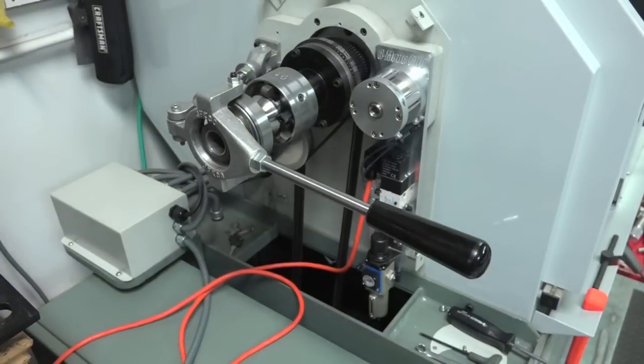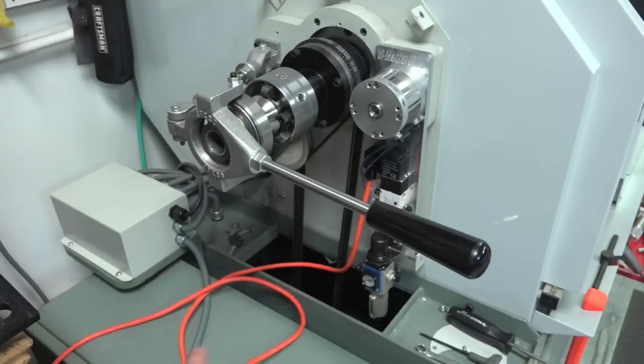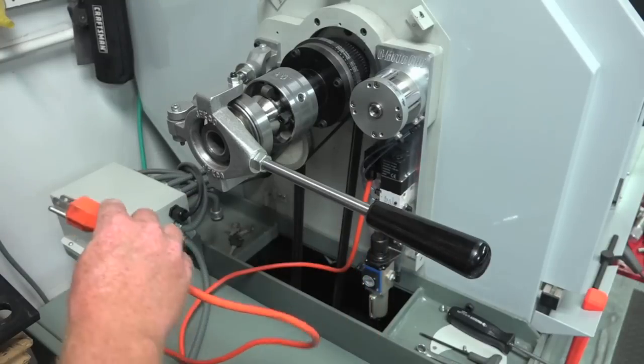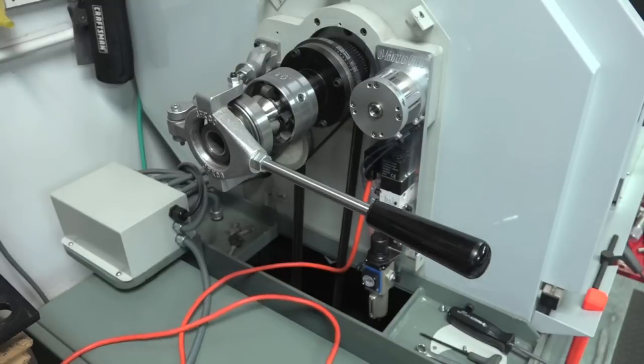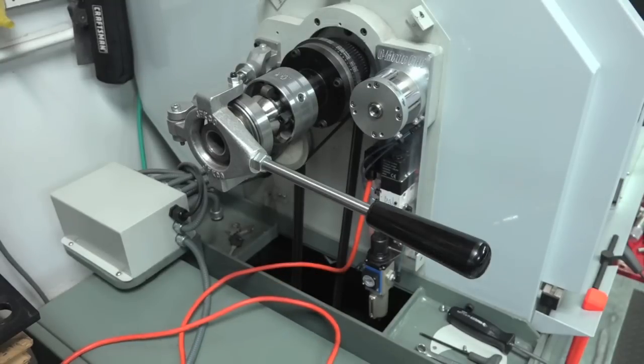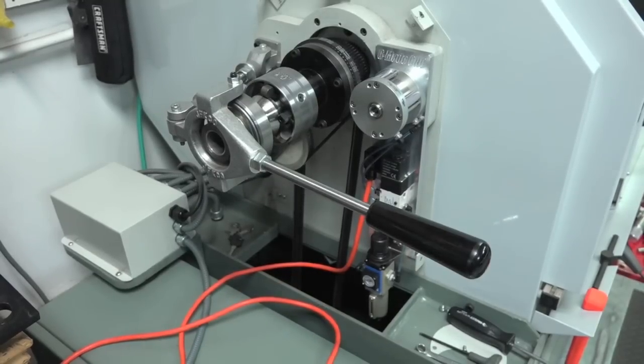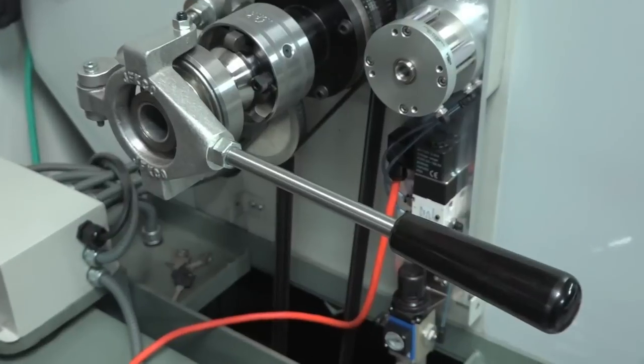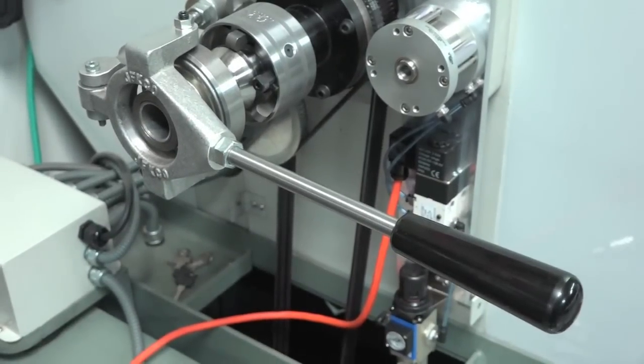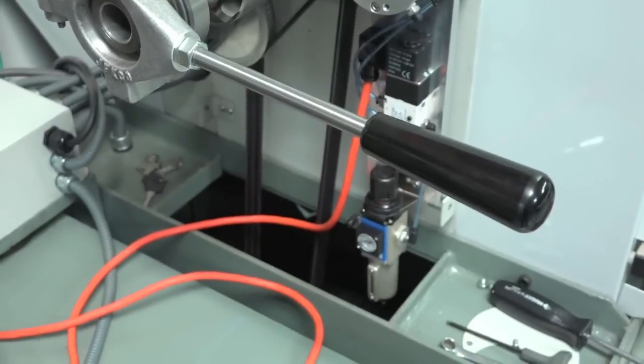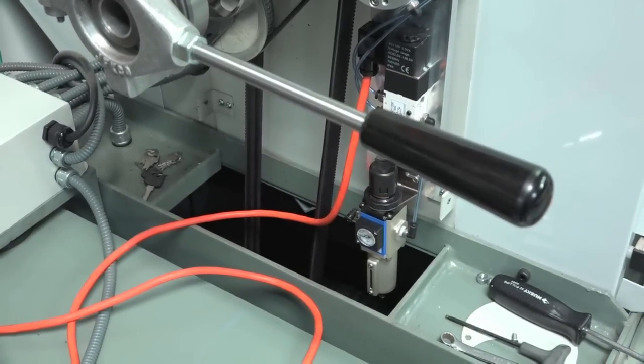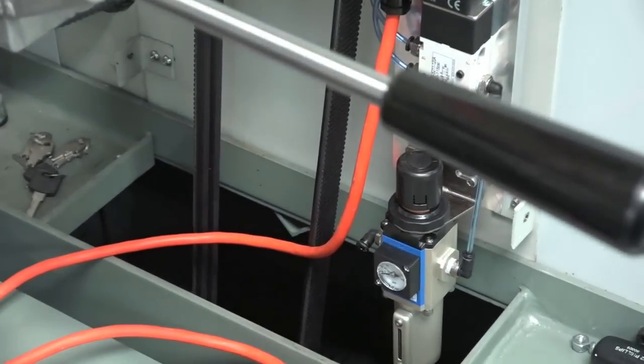So let's get this plugged into the regulator. We'll plug it into the back of the unit where it says collar closer. It's going to tie in right there.